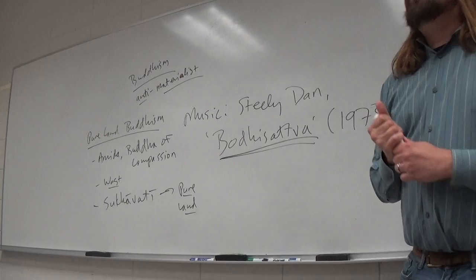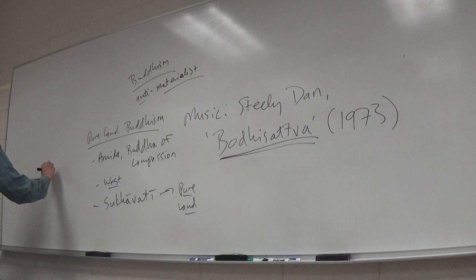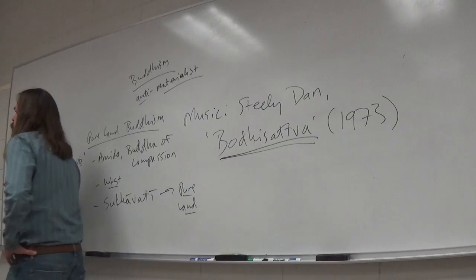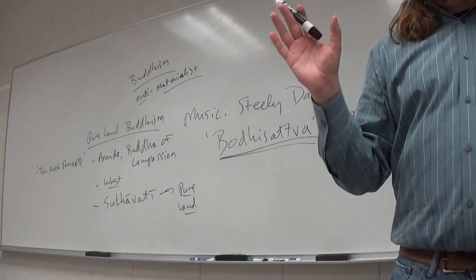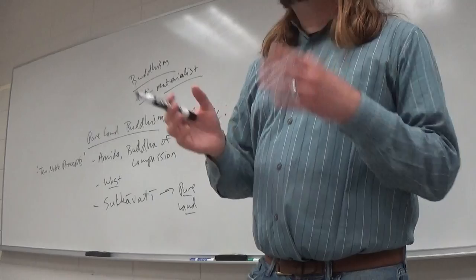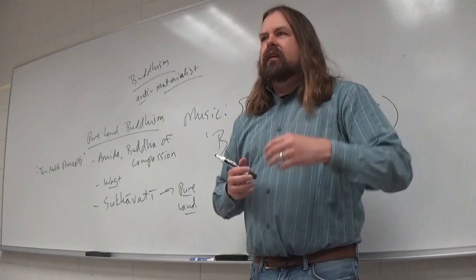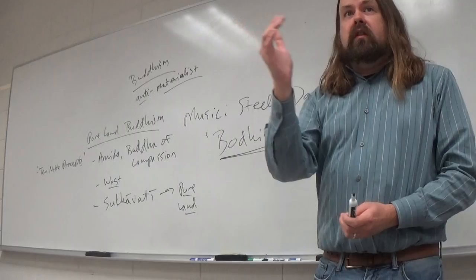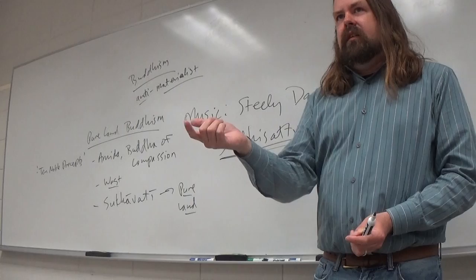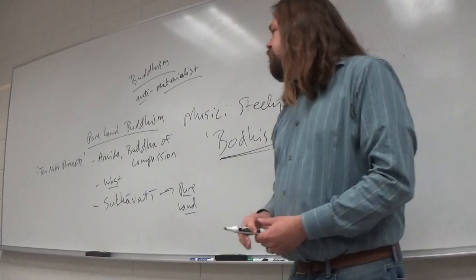What a Pure Land Buddhist wants is when they die to be reborn into Amida's Pure Land, from which they can receive instruction from him and his attendant Bodhisattvas to become Buddhas or Bodhisattvas themselves. You get to the Pure Land by following the Ten Noble Precepts common to all Buddhists - basically don't kill, don't steal, don't lie, standard morals.